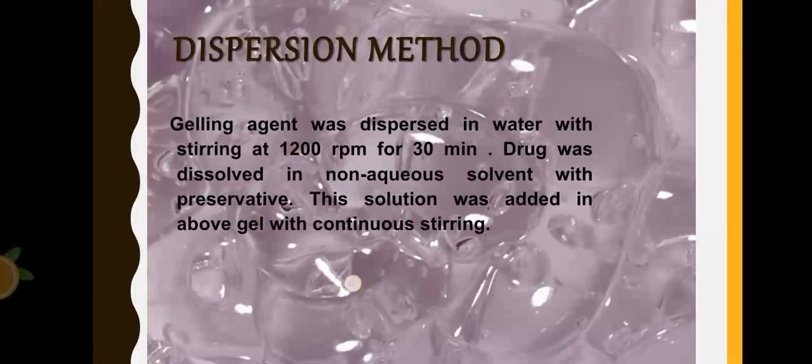The third method is dispersion method. In this, gelling agent is dispersed in water with stirring at 1200 RPM for 30 minutes. Drug is dissolved in non-aqueous solvent with preservative, and this solution is then added above the gel with continuous stirring.